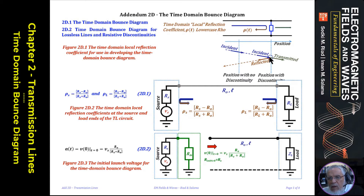This is what we call the bounce diagram in the time domain. On the right side, what reaches resistance R sub L is the superposition of the incident signal and the reflected signal. As we discussed in the chapter, the transmission coefficient equals the incident plus the reflected — which in the frequency domain was 1 plus gamma. Here it's going to be A plus ρ sub L times A, so it's (1 + ρ sub L) times A of T minus tau at that location.